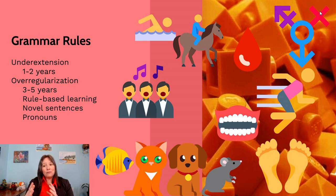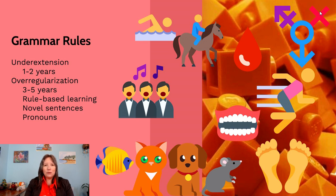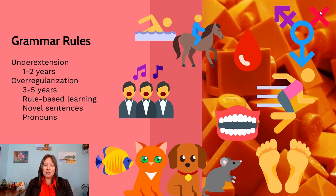Over-regularization is when we become familiar with the rules of grammar but overuse them. We learn about grammatical morphemes — that '-ed' on the end of a verb means past tense, and '-s' on the end of a noun means plural. But in English there are many exceptions to these rules.